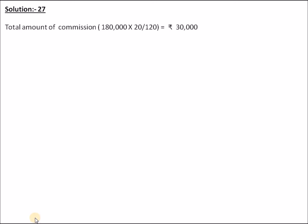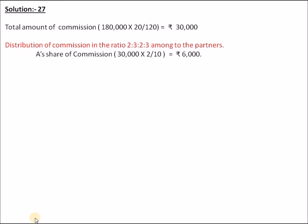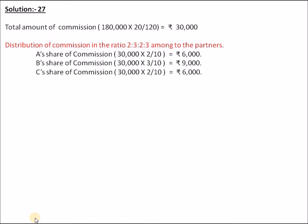The total commission is calculated on Rs. 1,80,000. Commission at 20% after charging such commission: 1,80,000 × 20/120 = Rs. 30,000. This commission of Rs. 30,000 is distributed to partners. For example: Rs. 30,000 × 2/10 = Rs. 6,000, and Rs. 30,000 × 3/10 = Rs. 9,000.